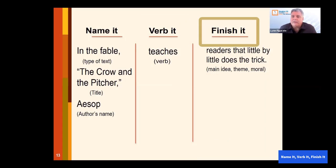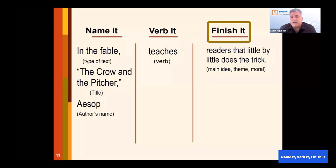We put the verb there, and then we finish it by having the main idea. If it's an informational passage, if the reading is narrative, we can do the theme. If it's in this case a fable, then you have the moral. So that Finish It piece is really to give what is this mainly about.